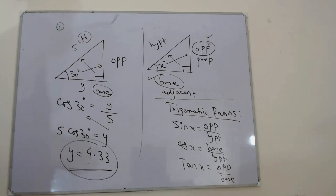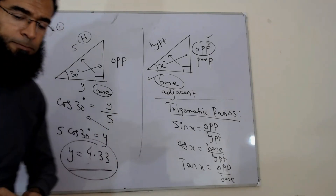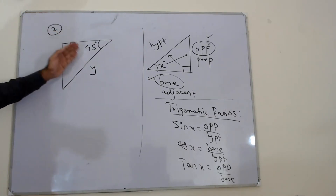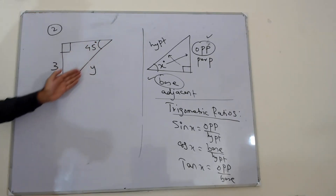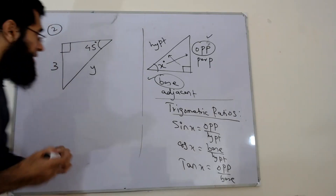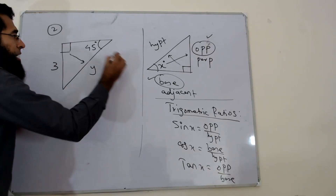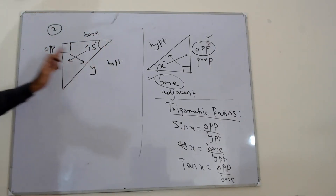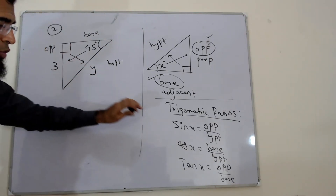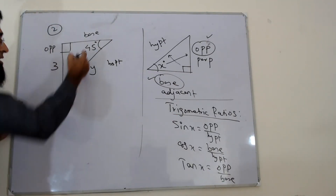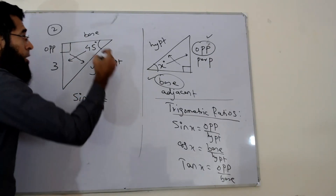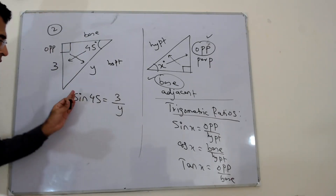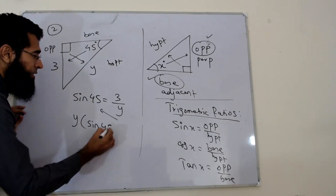Let's look at example number 2. You have a right angle triangle in which an angle is given, one side is 3, and you need to find another side y. First step: label the sides. 90 degrees ke saamne wali side is always the hypotenuse. Angle ke saamne wali side is the opposite, and the remaining side is the base. The two sides connecting here are opposite and hypotenuse, so we use sin x. Sin of the angle equals opposite over hypotenuse, which is 3 over y. Cross-multiplying: y into sin 45 equals 3.